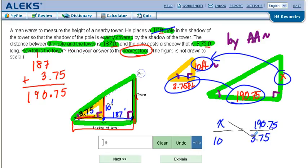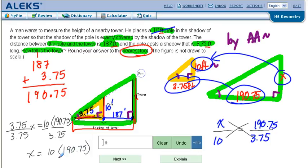And from here you cross multiply. 3.75x equals 10 times 190.75. To solve I'm going to divide by 3.75. So x is going to equal 10 times 190.75 divided by 3.75.